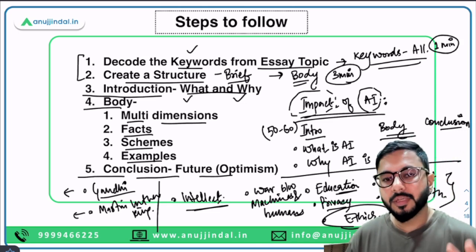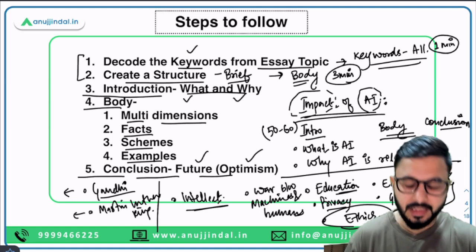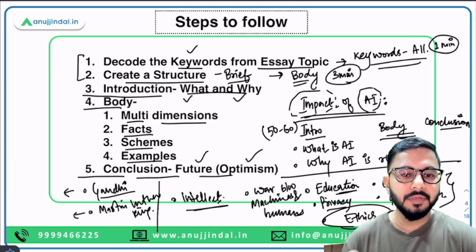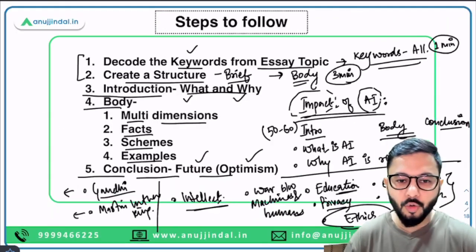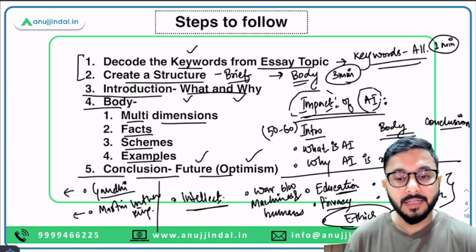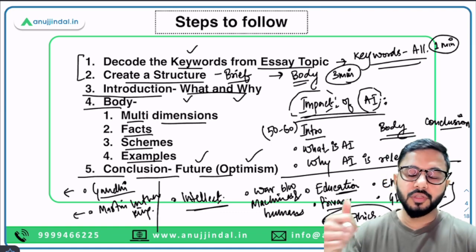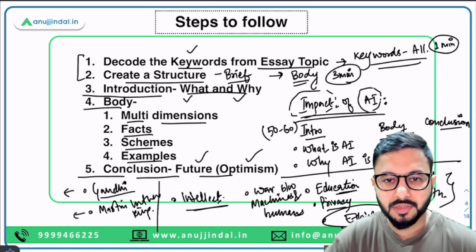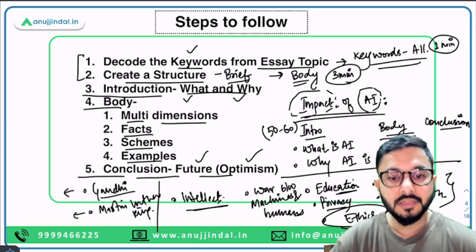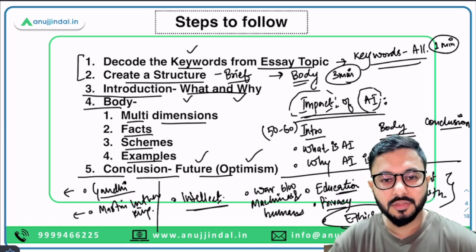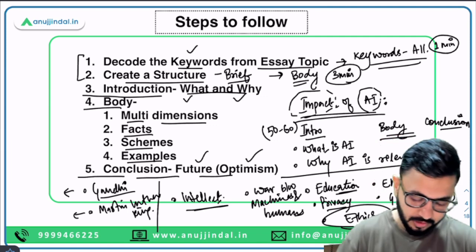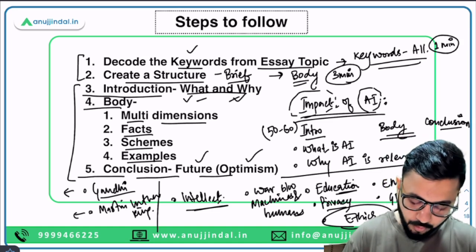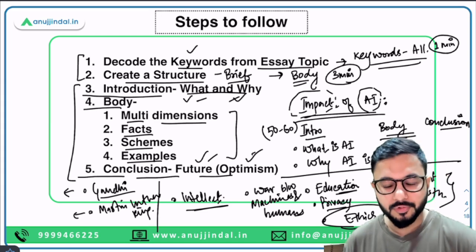The final part is the conclusion. In the conclusion, remember two things: it has to be futuristic and it has to be optimistic. This is the most important part of essay writing — the SOP. Number one: pick up all the essays given, decode keywords, create a brief structure. Once you've identified which essay to write, decode keywords again, then create a very detailed structure with introduction, body, and conclusion. Introduction: what and why. Body: four things. Conclusion: futuristic and optimistic.